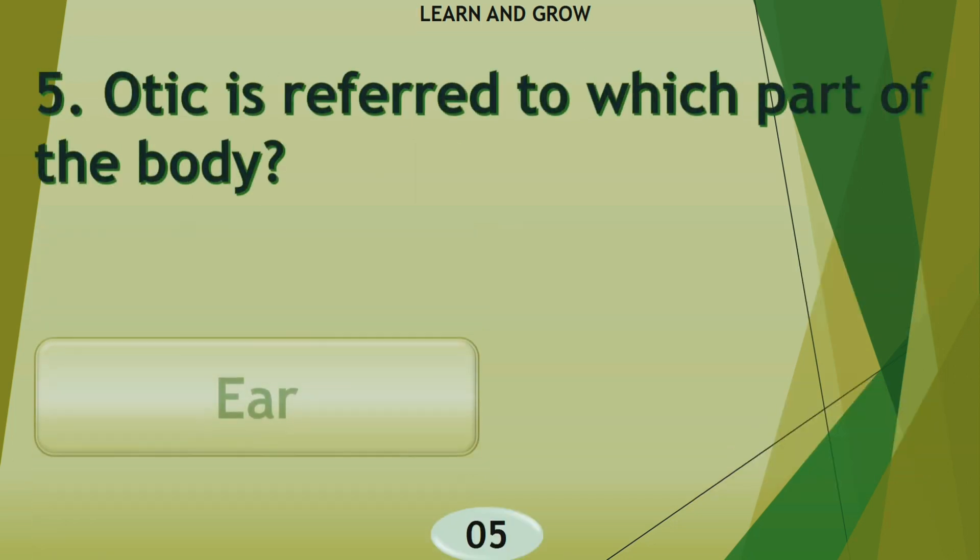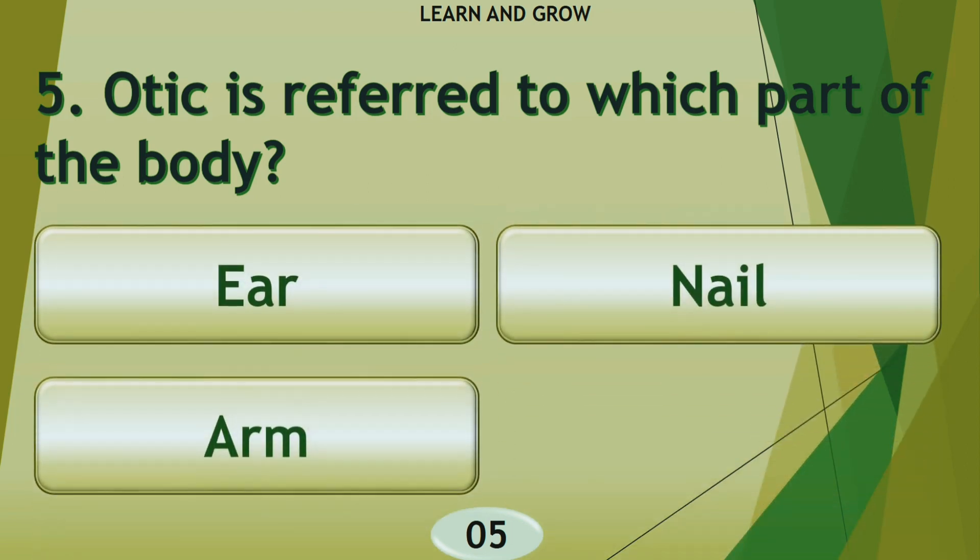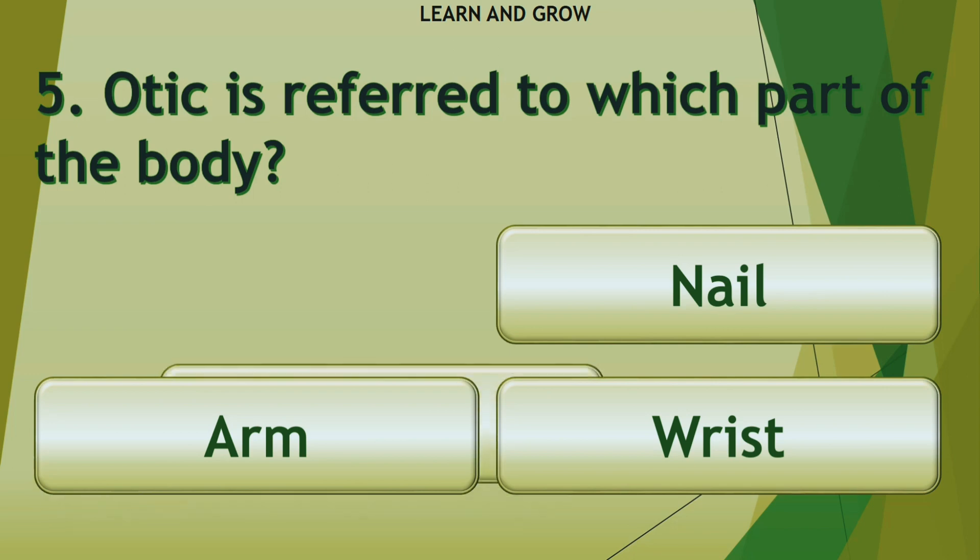Otic is referred to which part of the body? Options are A: ear, B: nail, C: arm, or D: wrist. The right answer is ear.